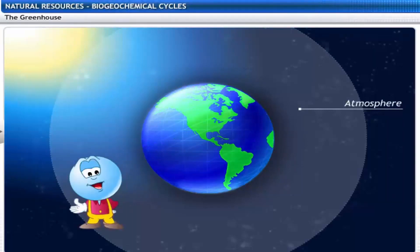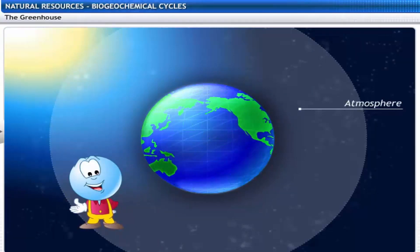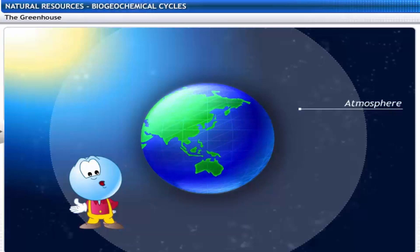We have already seen how biogeochemical cycles maintain balance in the biosphere. There are other processes that stabilize temperature on the earth. Let's explore this a little.